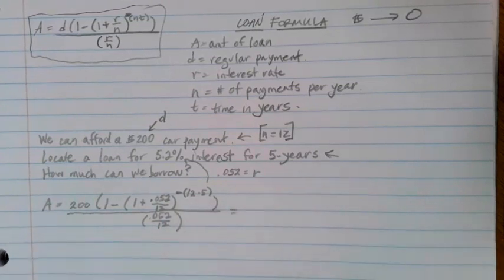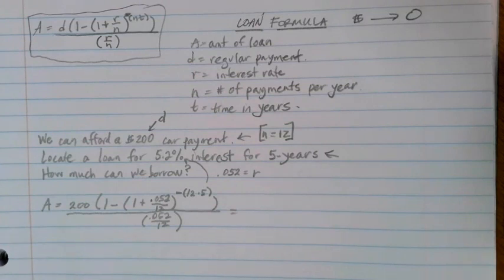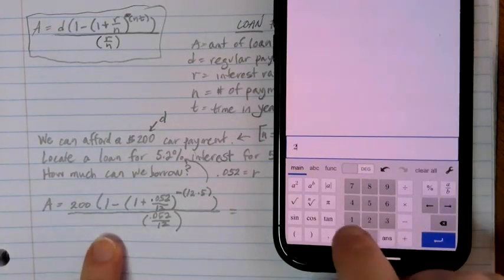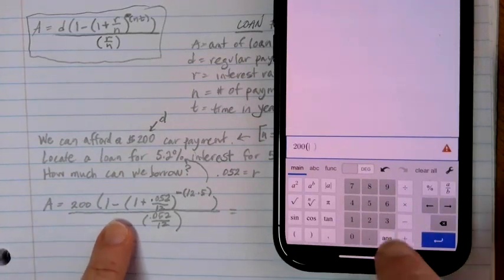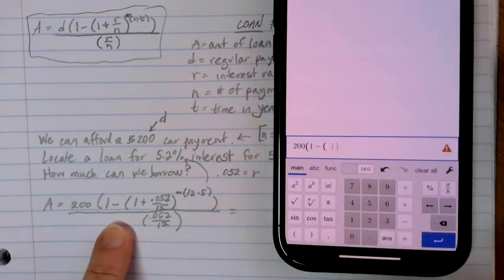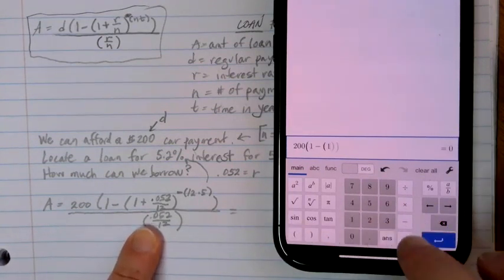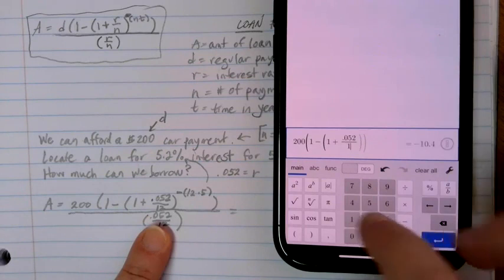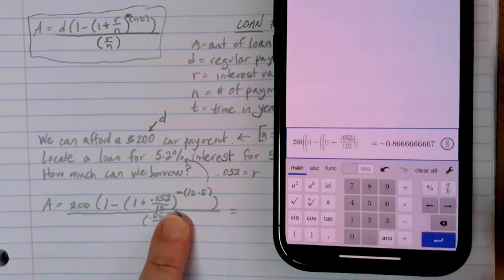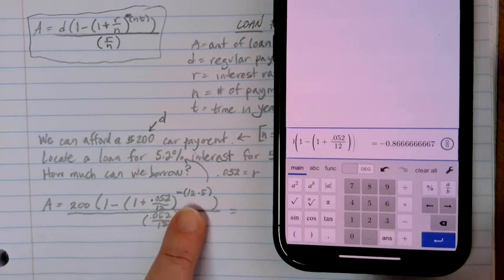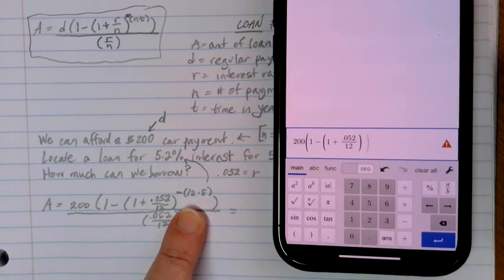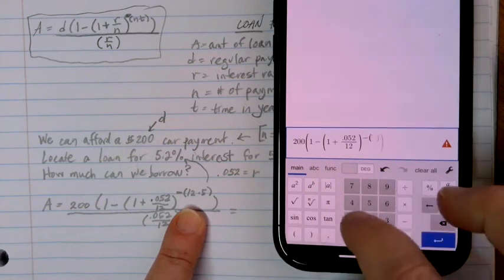At this point it's just a matter of entering all of this information into your calculator. So pulling this up here in Desmos, we start out with 200 times with a single parenthesis here, 1 minus, and then we need another set of parentheses for 1 plus R over N. So 1 plus 0.052 divided by 12. I'm going to use my right arrow to bring me back to the main level and close that set of parentheses. And the next thing that I need is going to be my exponent, so I'm going to hit that A to the B button. I need negative 12 times 5.